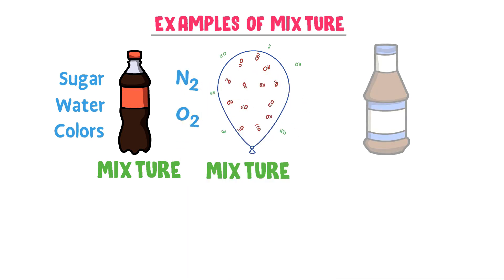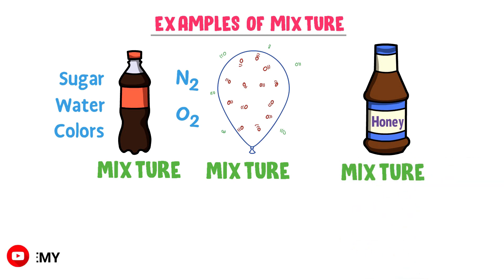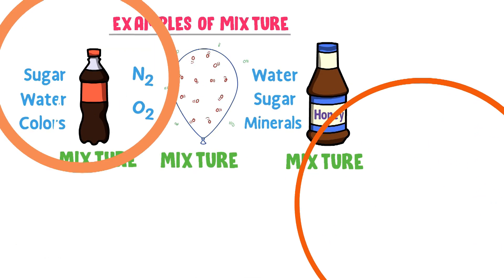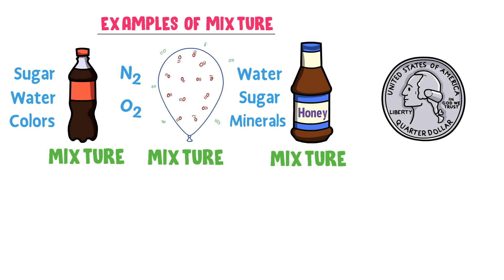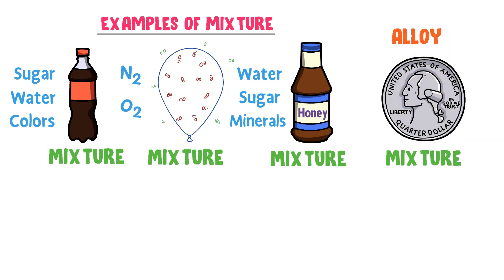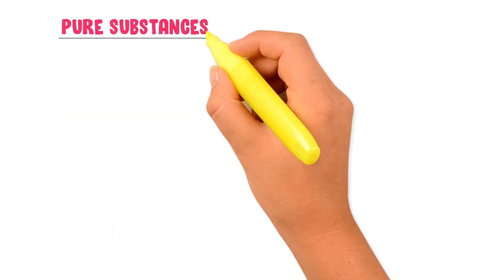Honey is not a pure substance; it is a mixture because it is made up of water, sugar, and minerals. Steel and coins are also not pure substances — they are mixtures because steel and coins are alloys made up of elements like copper and zinc.